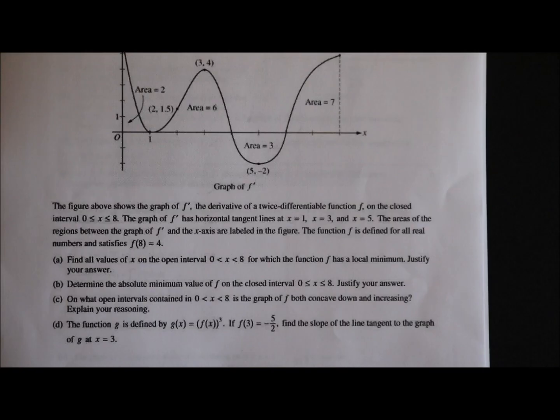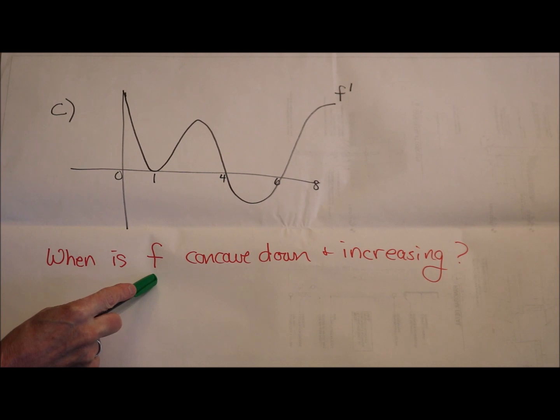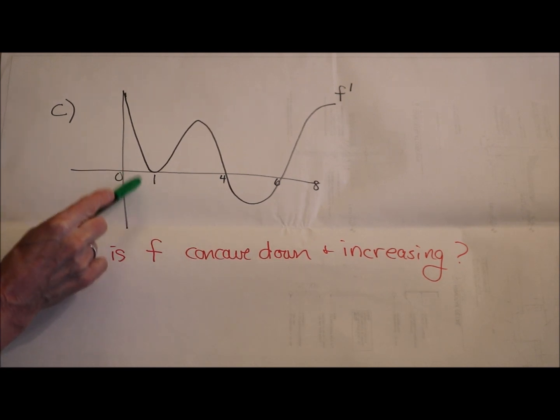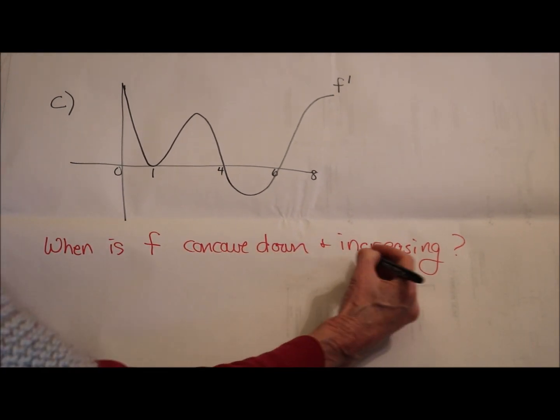Part C: On what open intervals contained in 0 to 8 is the graph of f both concave down and increasing? Explain your reasoning. Part C is asking us about the graph of f. So be very careful. The graph they gave us is not f, it's f prime, it's the derivative. So they're asking us, when is the graph of f concave down and increasing? Well, let's start with the increasing.